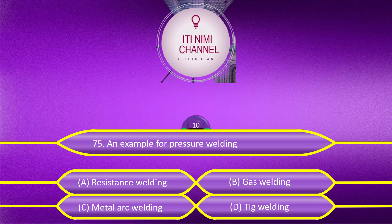An example of pressure welding is: Option A, Resistance Welding; Option B, Gas Welding; Option C, Metal Arc Welding; Option D, TIG Welding. The answer is Option A, Resistance Welding.